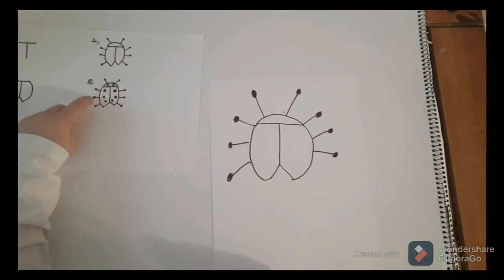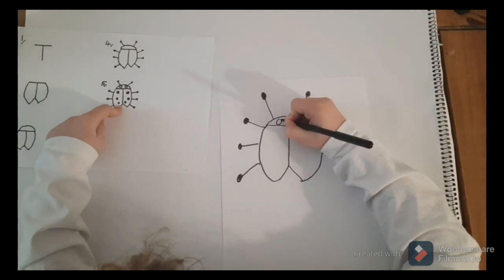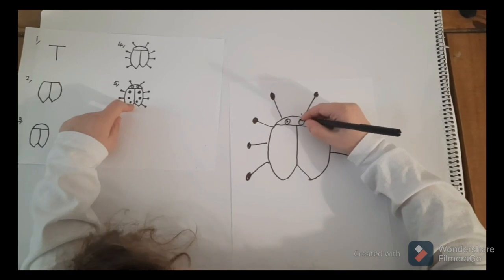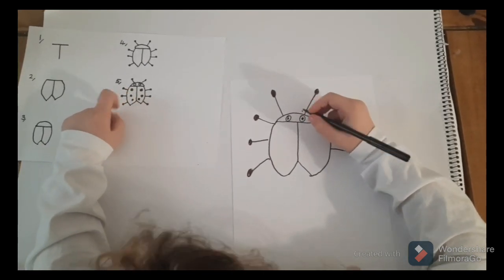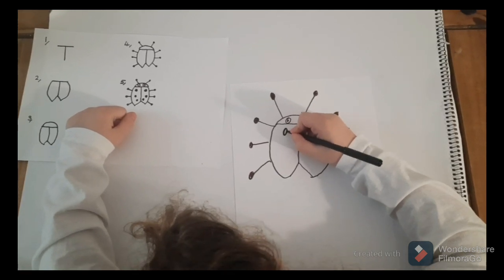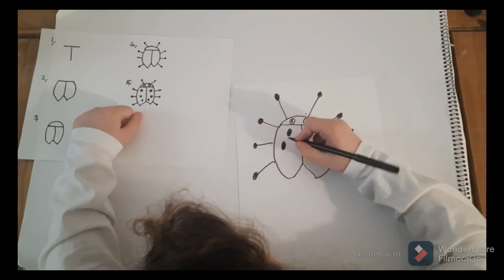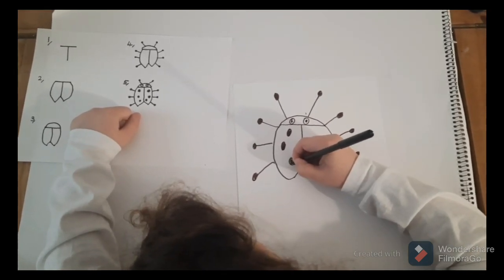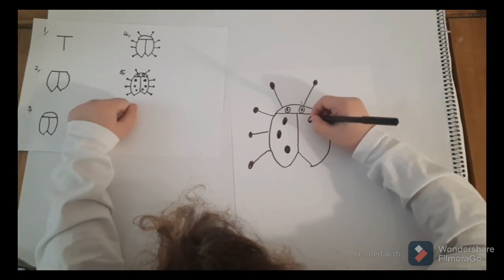Okay, step five. The eyes and the circles. A big circle and a small circle. A big circle and then a small circle. And then the little dots. Try and space the dots out. I'm just doing three on each side. Okay.